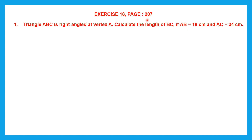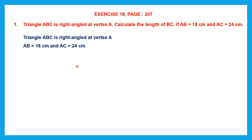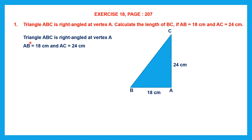Exercise 18 is on page number 207. Question 1: Triangle ABC is right angled at vertex A. Calculate the length of BC if AB is 18 centimeters and AC is 24 centimeters. Let's begin by writing what's given to us. Triangle ABC is right angled at vertex A. Let's draw a triangle. Since A is the right angle vertex, the right angle — 90 degrees — is at A.